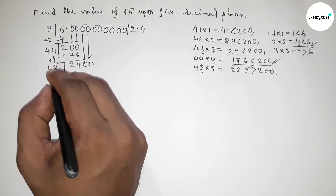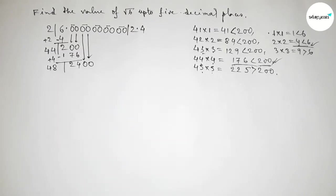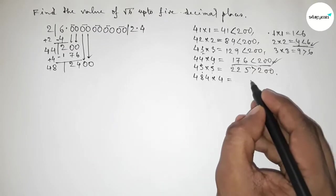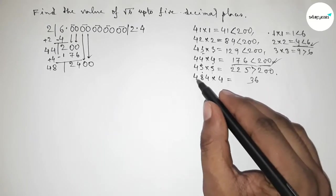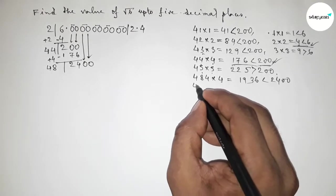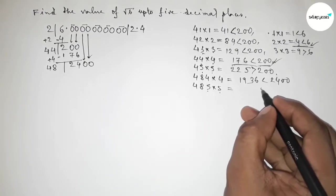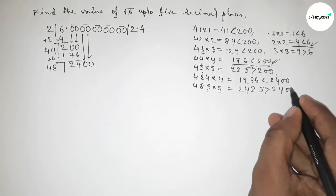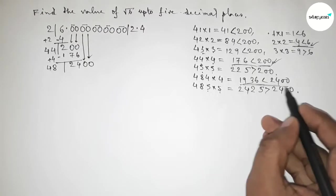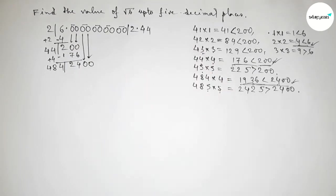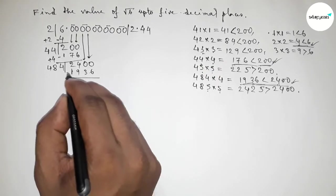We need a number beside 484. You should check 1, 2, 3 at home. Taking 4: 484×4=1936, which is less than and almost near 2400. Taking 5: 485×5=2425, which is greater than 2400. So we take 4, since 1936 is almost near and less than 2400. Write down 1936.